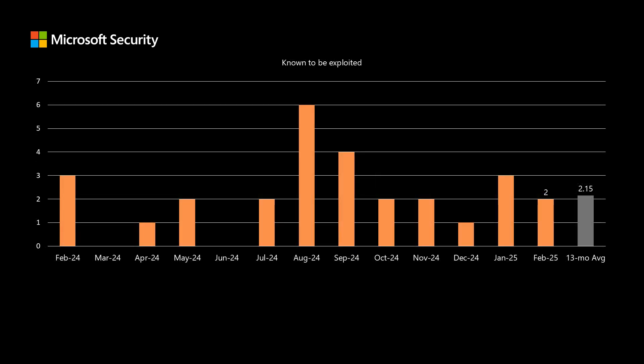Another thing that represents risk not captured in the CVSS score is whether a vulnerability is known to be exploited out in the wild. We've been averaging just over two of these per month over the past 13 months. This month, we have two vulnerabilities that are known to be exploited out in the wild. This is one of the things I really key into because these are situations where a threat actor has built exploit code and deployed it in a way that Microsoft or our partners have detected that exploitation — meaning customers are being attacked with these vulnerabilities. It's imperative to deploy the fixes so that you can be protected.